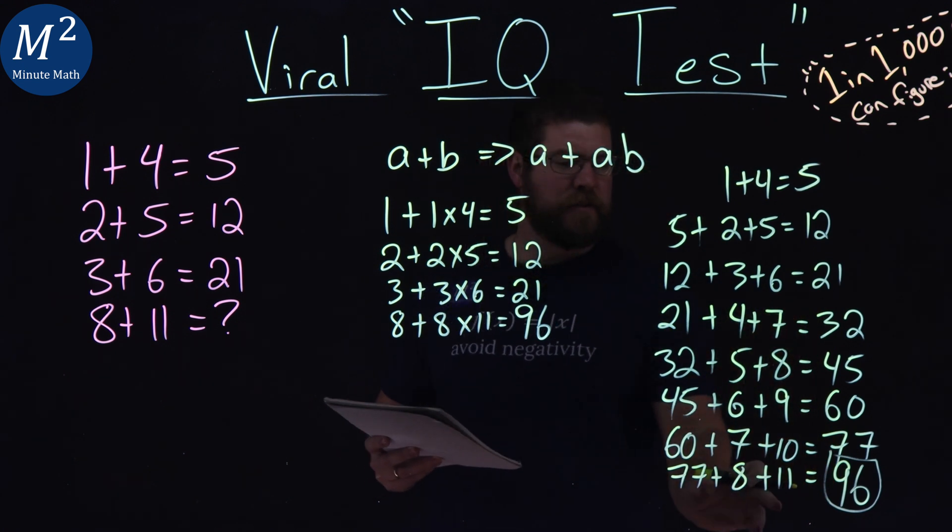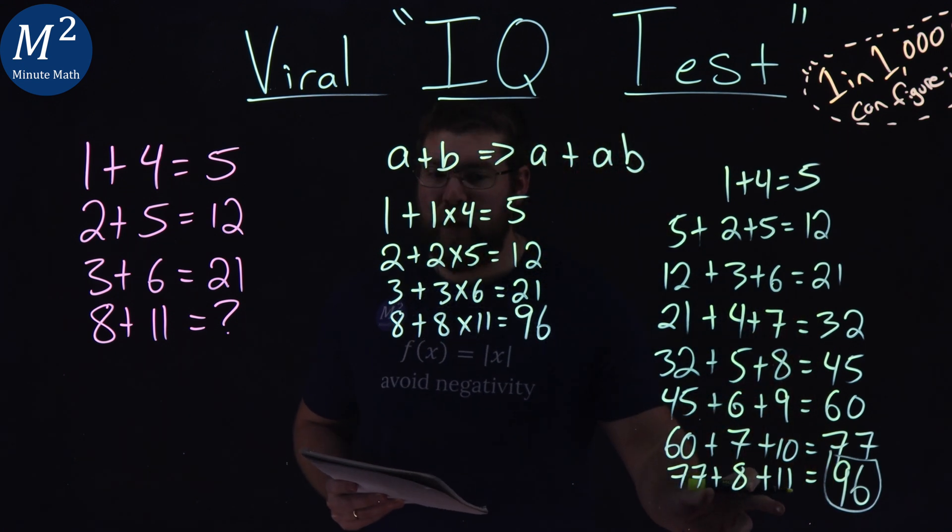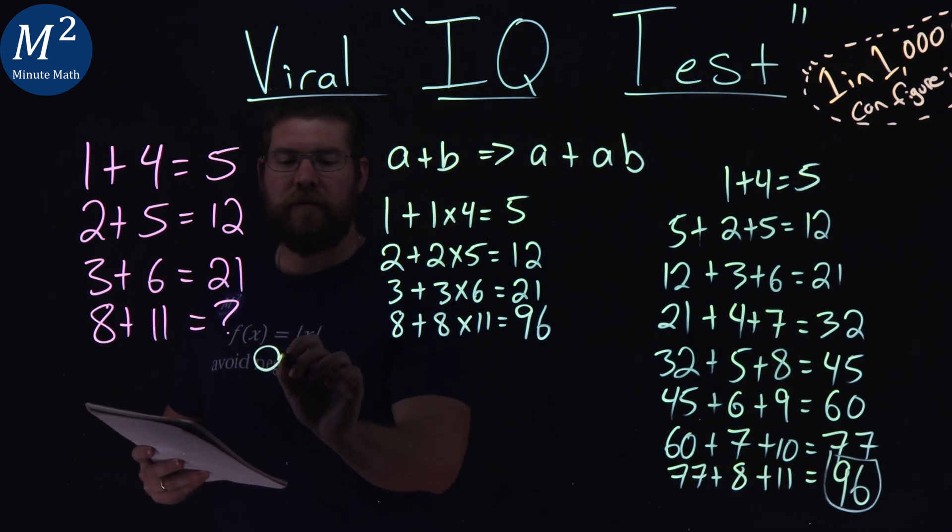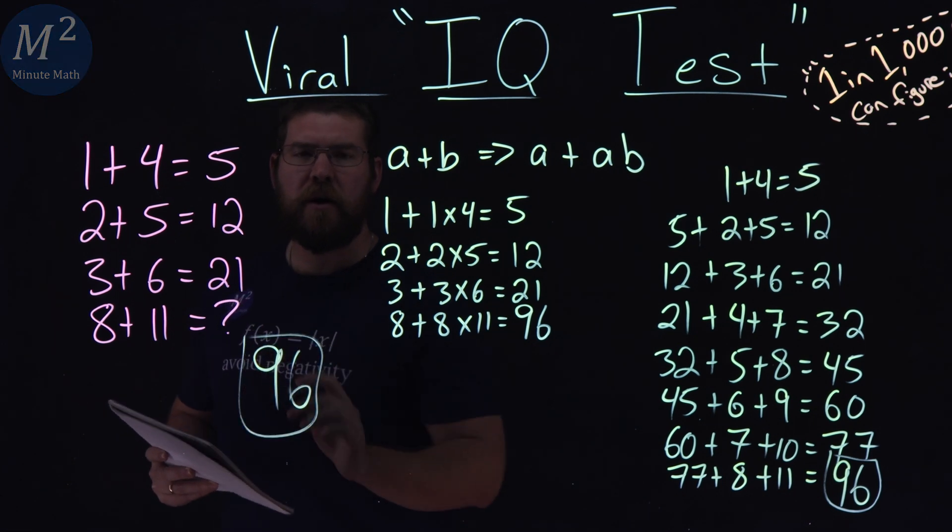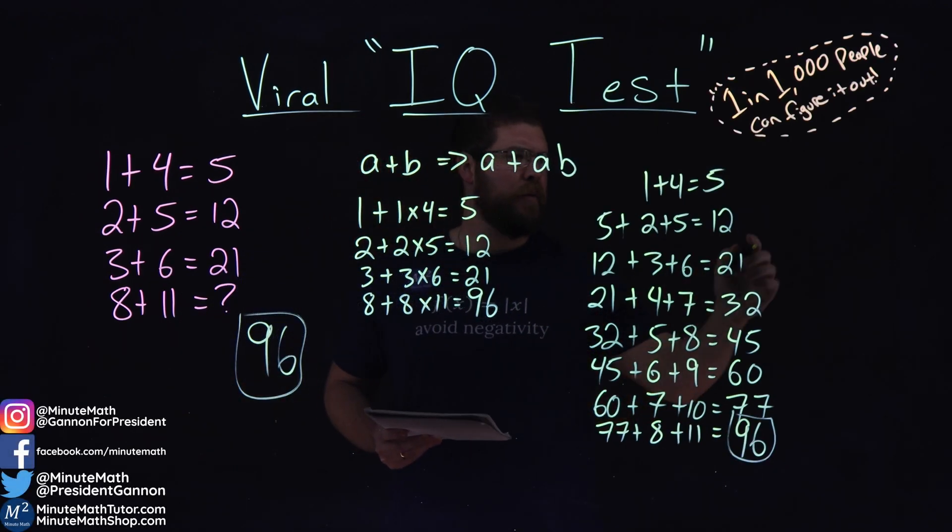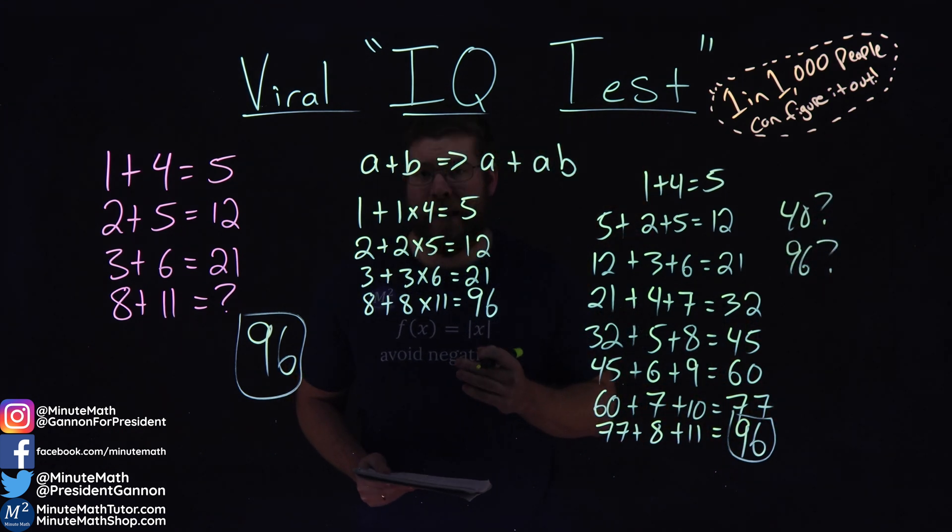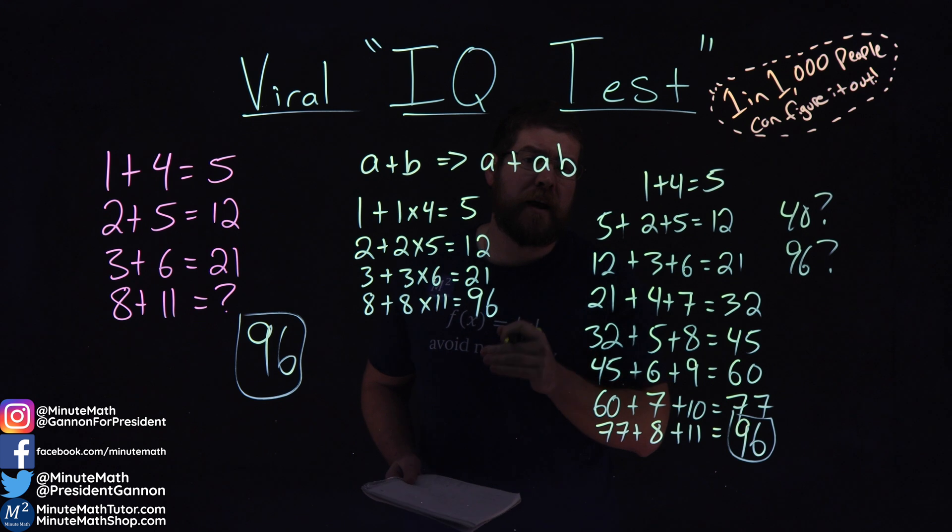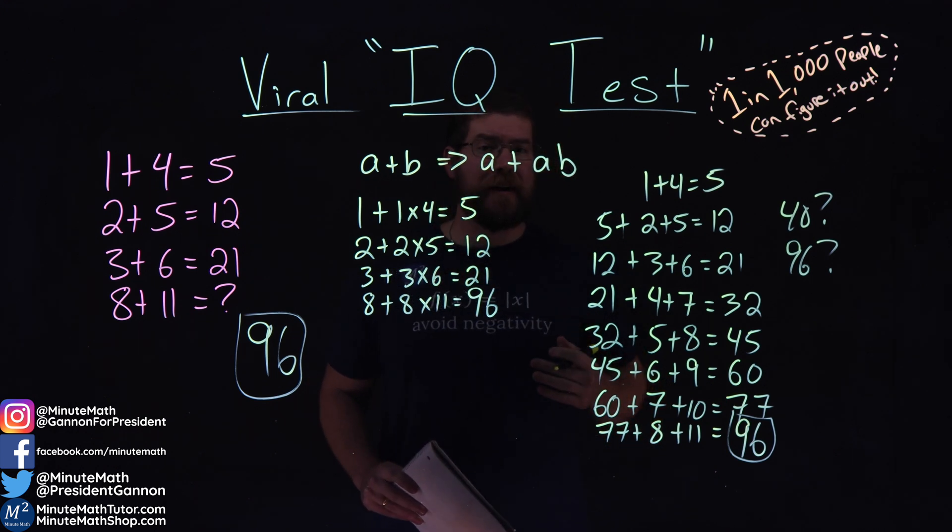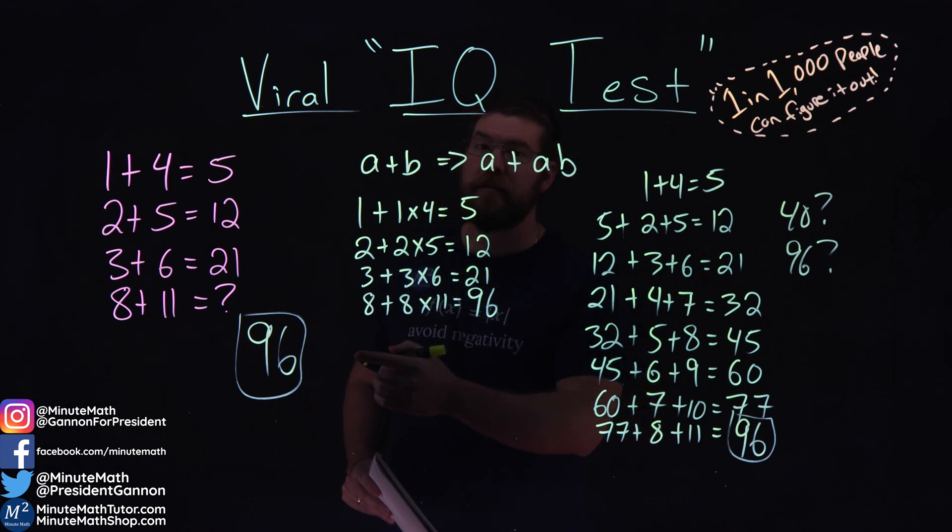Interesting. So 96, by using that running total method, still got an answer of 96. Well, what camps do you fall in? Do you camp fall into the 40, 96? Or do you think there's some other answer for me? Let me know down in the comment section below which one you think is the correct answer, but I'm here to tell you it's 96.